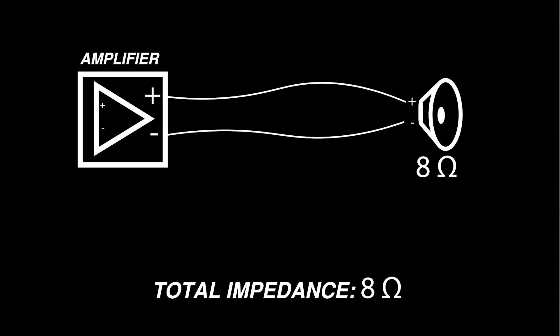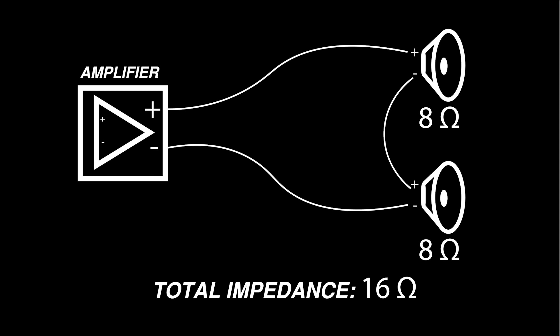Connecting one 8 ohm speaker will present an 8 ohm load to the amplifier. When you connect more speakers in series, you simply add the impedance rating of each of the speakers together. Two 8 ohm speakers in series present a 16 ohm load to the amplifier. Connecting a 4 ohm speaker and an 8 ohm speaker in series will present a 12 ohm load to the amplifier.